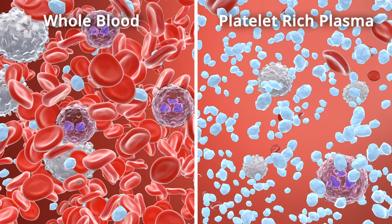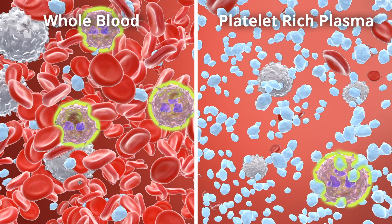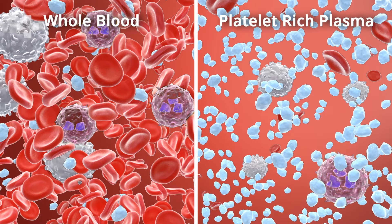The PRP sample should contain a significantly reduced concentration of red blood cells. The PRP sample should also have a reduced number of neutrophils, which degrade collagen and other extracellular molecules.